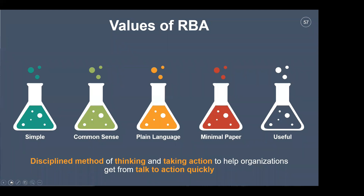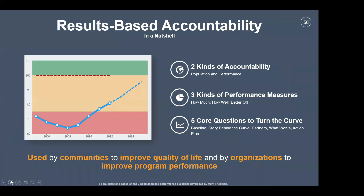The basic concepts of RBA are based on two kinds of accountability: being very clear about the difference between population accountability — everybody in the community or neighborhood — and performance accountability — the people we're actually working with in our program strategies and activities. To help us do this, we need performance measures telling us how much do we do, how well do we do it, and is anyone better off. And then we have five core questions to turn the curve.